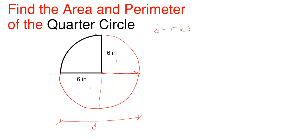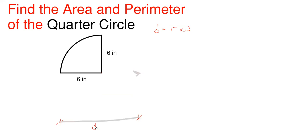As we have here with this quarter portion showing six inches and six inches, that is just going to be the radius of the overall circle this quarter has been cut from. So this is the radius for the entire circle it's been cut from.